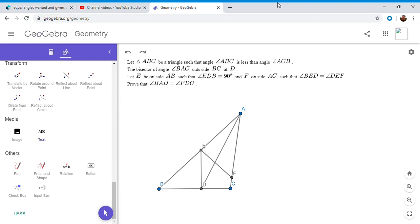If you would like to try to solve it, feel free to pause the video. Now I'm going to go over the problem. We have a triangle ABC where angle ABC is less than angle ACB. The bisector of angle BAC meets side BC at point D. E is on AB so that ED is perpendicular to BC, and F is on AC so that angle BDE is equal to angle DEF.